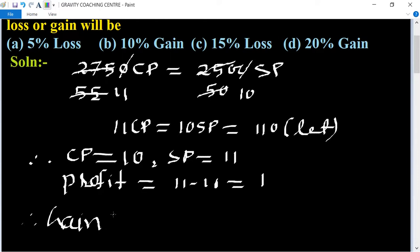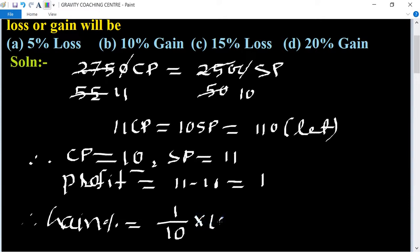Therefore, gain percent equals profit divided by CP, multiplied by 100. That is 1 divided by 10, multiplied by 100, which equals 10%. This is the required answer.